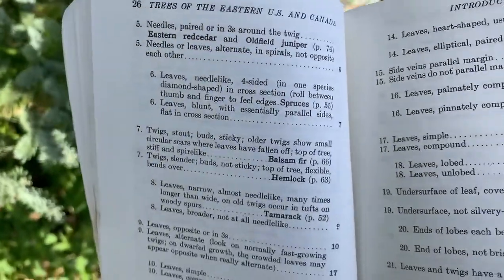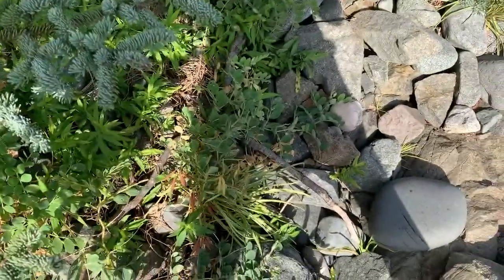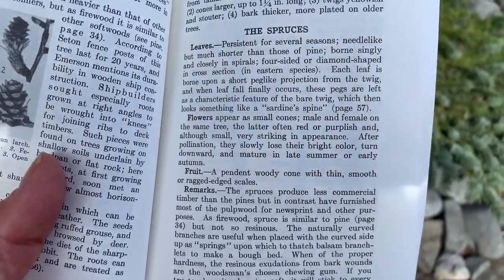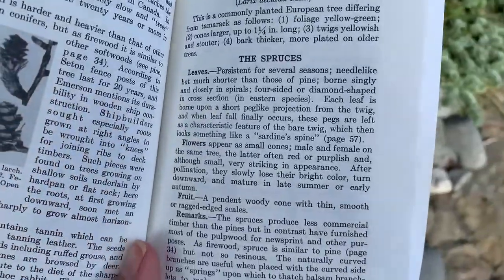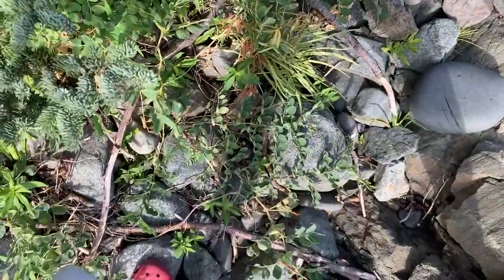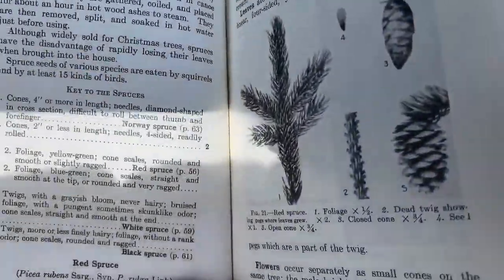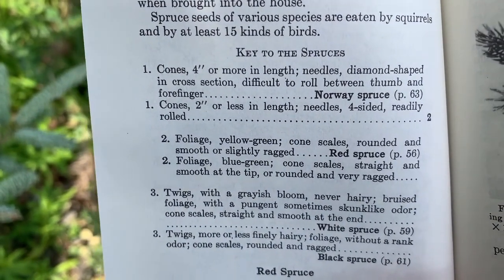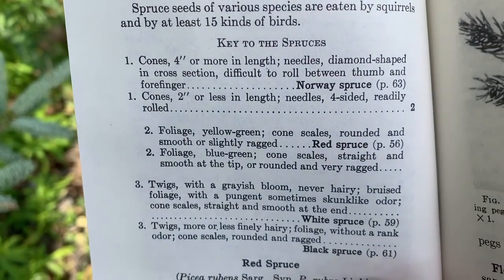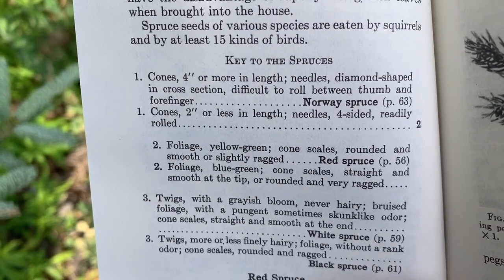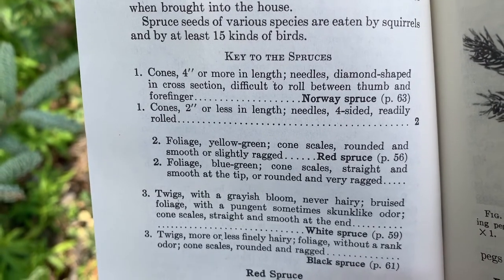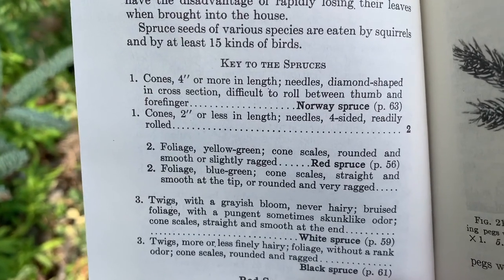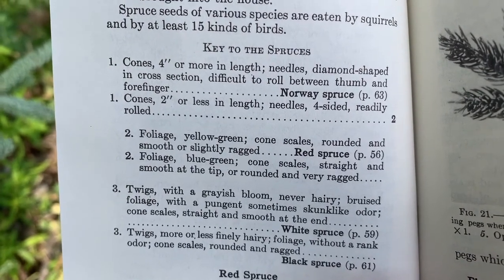So I go to page 55 where the spruces are located. I'm on page 55 and it gives me some background information, which I should probably read through to make sure I'm on the right track, but we're just going to keep going. If I turn to the next page, I'll see the key to the spruces — that's where I want to be. Now I start over again with number one. Here we have to find some cones. We're looking at cone length, so I've got to find some. The key also talks about the needles again — whether they're difficult to roll between the thumb and forefinger, or if they readily roll.